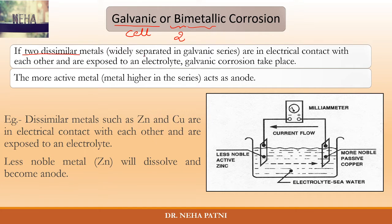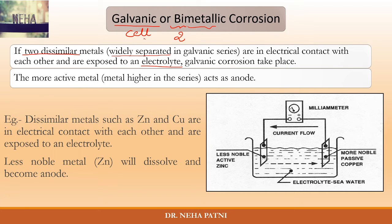The second condition is they should be widely separated in the galvanic series. If they are near in the galvanic series or widely separated, that creates a difference. Now, if two dissimilar metals are in electrical contact with each other and are exposed to an electrolyte, then galvanic corrosion takes place.